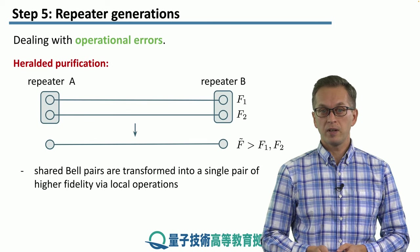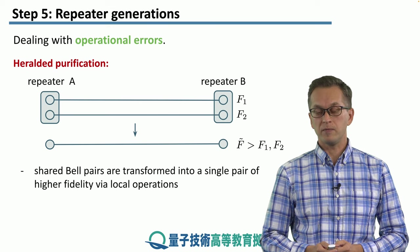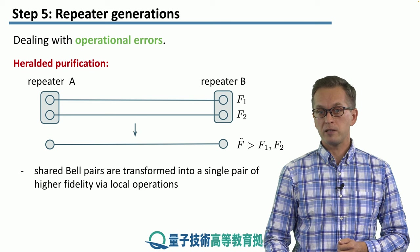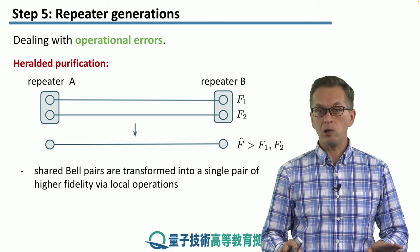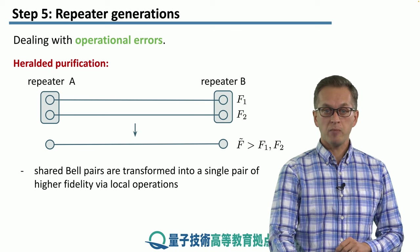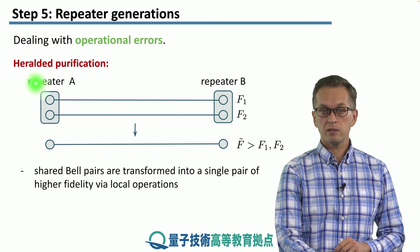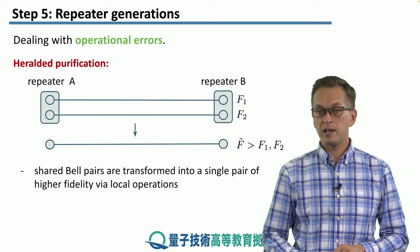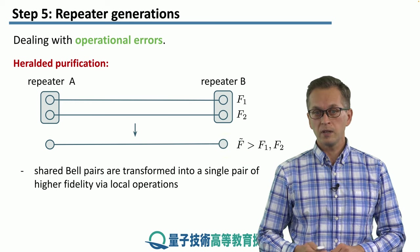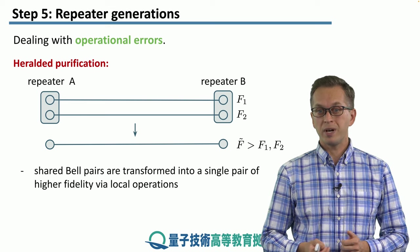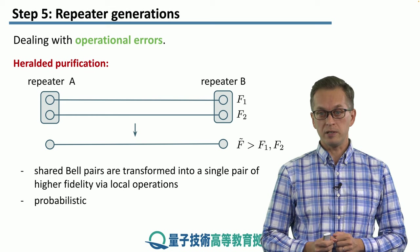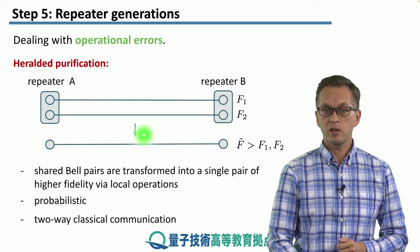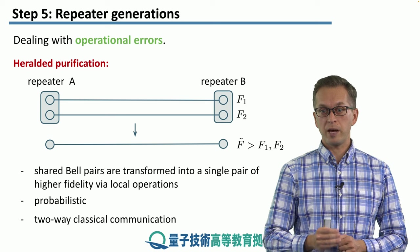How do we deal with operational errors? The first approach is via heralded purification. A and B distribute or share at least two copies of a bell pair, and each bell pair has its own fidelity F1 and F2. Then they apply local operations on their qubits — A applies operations on its side and so does B — and the result is a single bell pair shared between A and B with fidelity higher than F1 or F2. However, this process is probabilistic and requires two-way classical communication: repeater A has to send results of its operations to B, and B has to send results back to A before they can proceed.